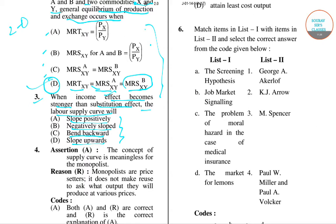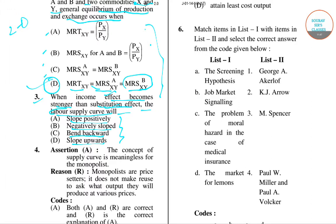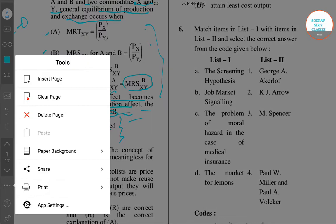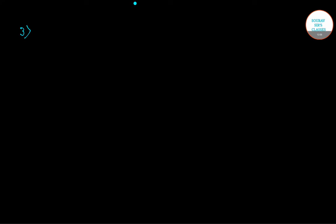To answer this, we need to understand income and substitution effects in terms of the labor supply curve — measured on axes of wage and labor supply. Laborers face a trade-off between labor and leisure: they get utility from leisure and earn wage from labor, but labor itself is a disutility since it means giving up leisure.